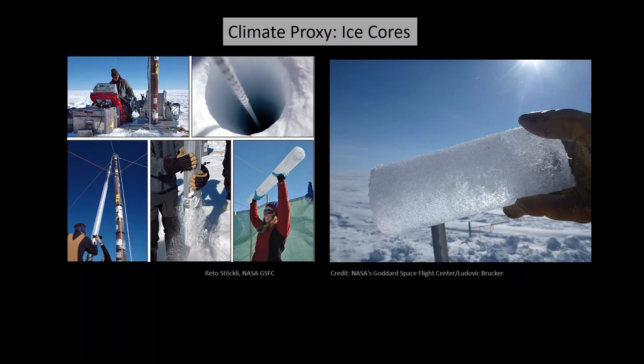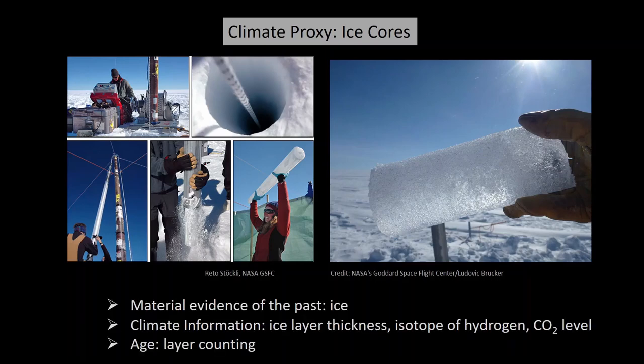Let us look at examples of a few terrestrial proxies. Ice core is an important proxy. Scientists have taken ice cores from ice sheets present in Greenland and Antarctica. The material evidence in this case is ice. The ice layer thickness, isotopic composition of hydrogen, or the level of CO2 present in bubbles tells us about past climate. We can assign a calendar year to individual layers by layer counting.